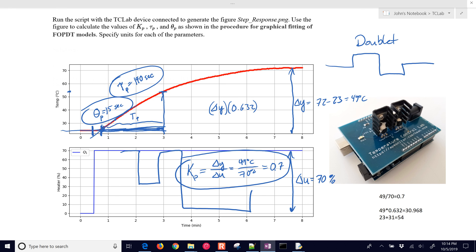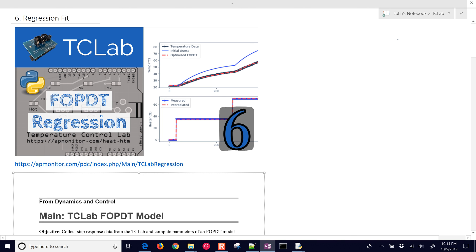And so we have to use optimization to minimize some of the squared errors between our first-order plus dead time model and the data. So that's going to be the subject of the next one, where we use regression to be able to fit these models instead.